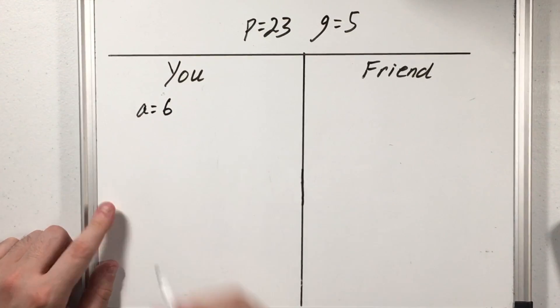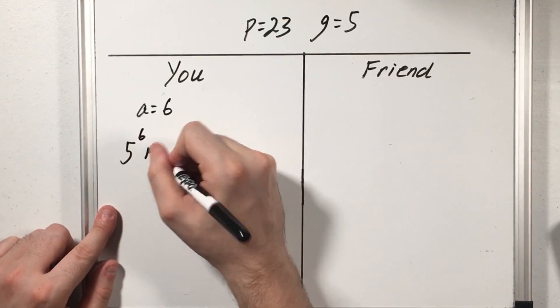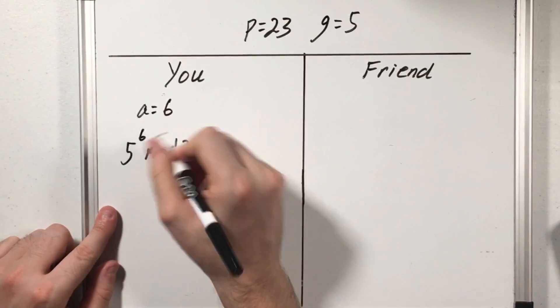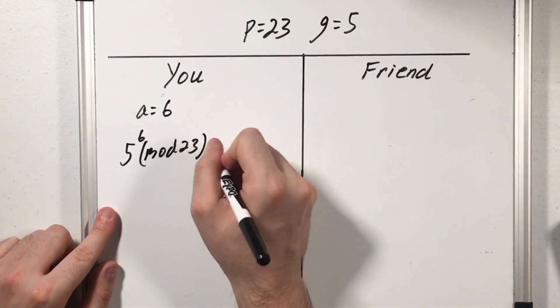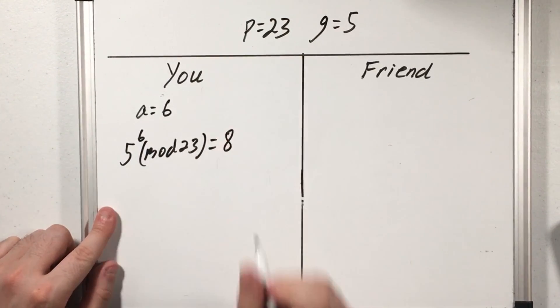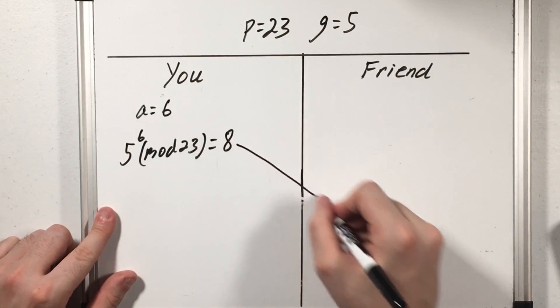Then what I'm going to do is our G value raised to my secret number 6 and I do this mod 23 and doing the calculation I see this is congruent to 8. Then I send this value to my friend.